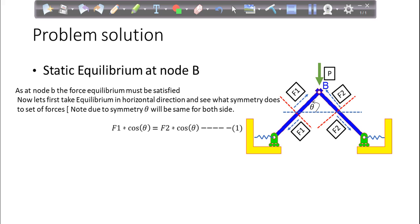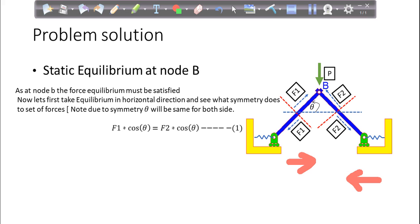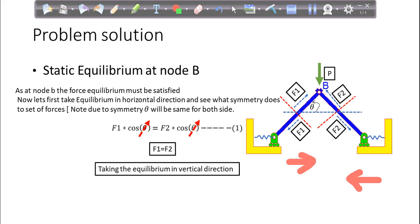Also the angle made by the linkage is theta from the horizontal. So let's first do a horizontal force balance and see what symmetry does to the force balance. When you do the horizontal force balance, what you'll get is F1 cos theta equals F2 cos theta. So F1 cos theta acting in this direction and F2 cos theta acting in this direction. For equilibrium, F1 cos theta should equal F2 cos theta. By canceling cos theta from both sides, you get F1 equals F2. So this is a conclusion that because of symmetry, F1 equals F2.